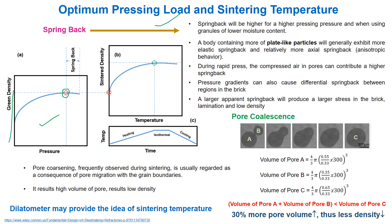This is due to the spring back effect. Spring back will be higher at higher pressing pressure and when using granules of low moisture content. A body containing more plate-like particles will generally exhibit more elastic spring back and relatively more axial spring back (anisotropic behavior). During rapid pressing, compressed air in the compact can contribute to higher spring back. Pressure gradients can cause differential spring back between regions in the brick, producing larger stresses, lamination, and low density. An optimum pressing load is required for a particular brick dimension.